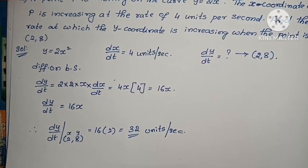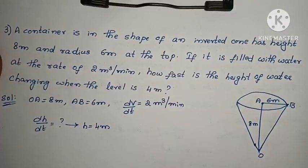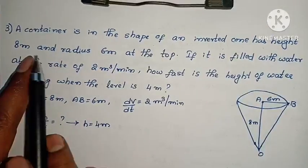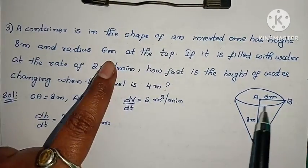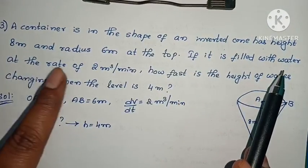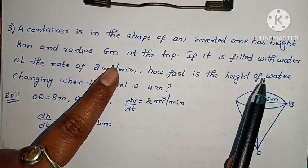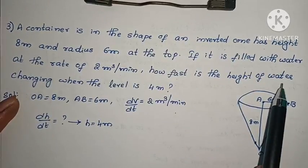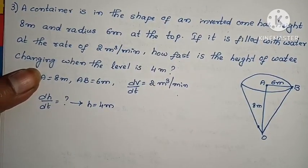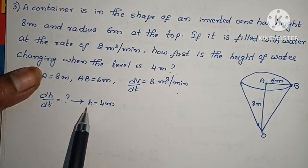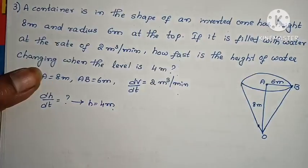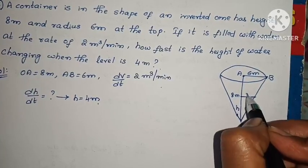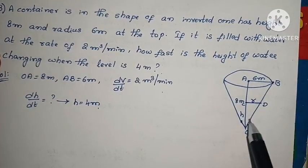Last problem: A container is in the shape of an inverted cone, has height 8 meters and radius 6 meters at the top. If it is filled with water at the rate of 2 meter cube per minute, how fast is the height of water changing, dH/dt, when the level is 4 meters?